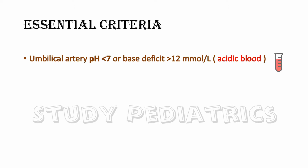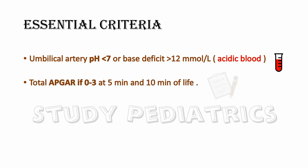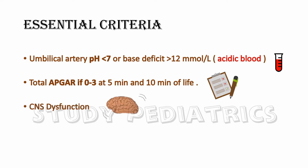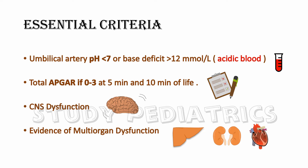Now let's see the essential criteria for labeling a child as having Hypoxic Ischemic Encephalopathy. Essential criteria includes umbilical artery pH less than 7, or base deficit more than 12 millimoles per litre, i.e. acidic blood; total Apgar score of 0-3 at 5 minutes and 10 minutes of life; CNS dysfunction; and evidence of multi-organ dysfunction.